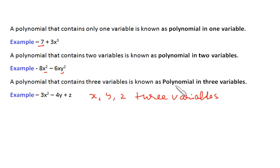So we call it a polynomial in three variables. Here there are two terms, here there are three terms, but it is a polynomial in one variable since only one variable x is there. Here there are two variables x and y. Here there are three variables x, y, and z.